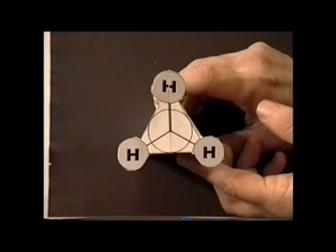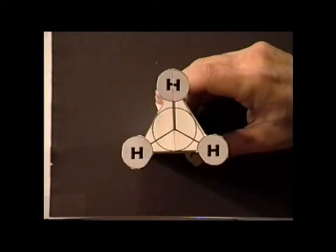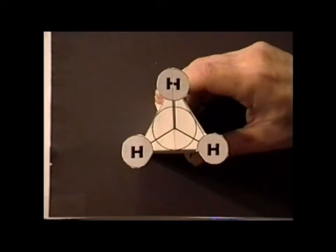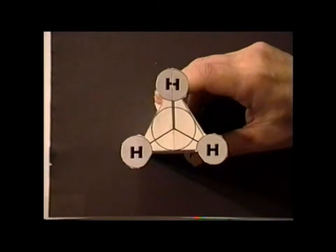Now we return again to our eclipsed ethane. Recall that we had assigned it to the plane group D3H.